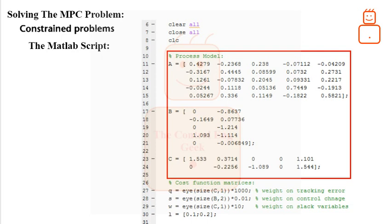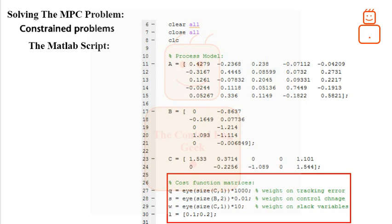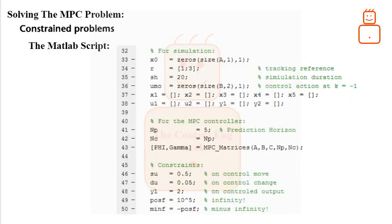Here, we have a stable open loop process with two inputs and two outputs. The second portion of the file gives values for the weights used in the cost function including the slack variable. Okay, let me show another part of the file.